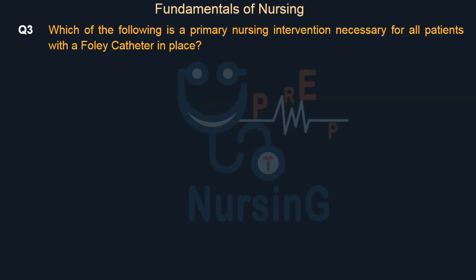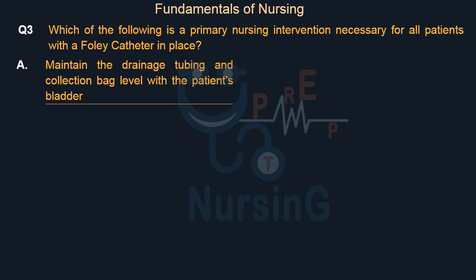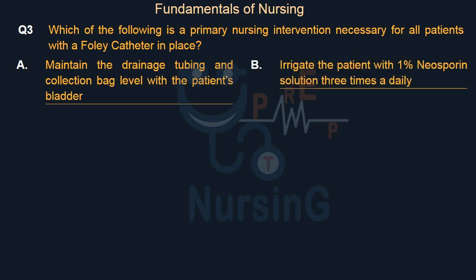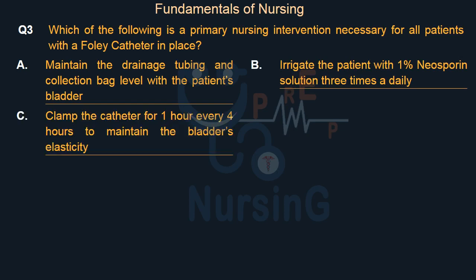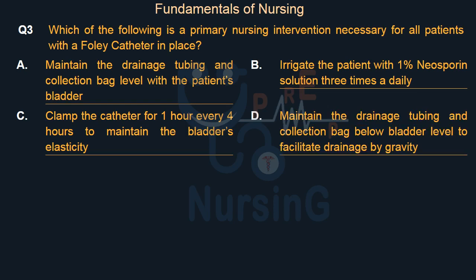Which of the following is a primary nursing intervention necessary for all patients with a Foley catheter in place? Option A: Maintain the drainage tubing and collection bag level with the patient's bladder. Option B: Irrigate the patient with 1% neosporin solution 3 times daily. Option C: Clamp the catheter for 1 hour every 4 hours to maintain the bladder's elasticity. Option D: Maintain the drainage tubing and collection bag below bladder level to facilitate drainage by gravity. Right answer is Option D.